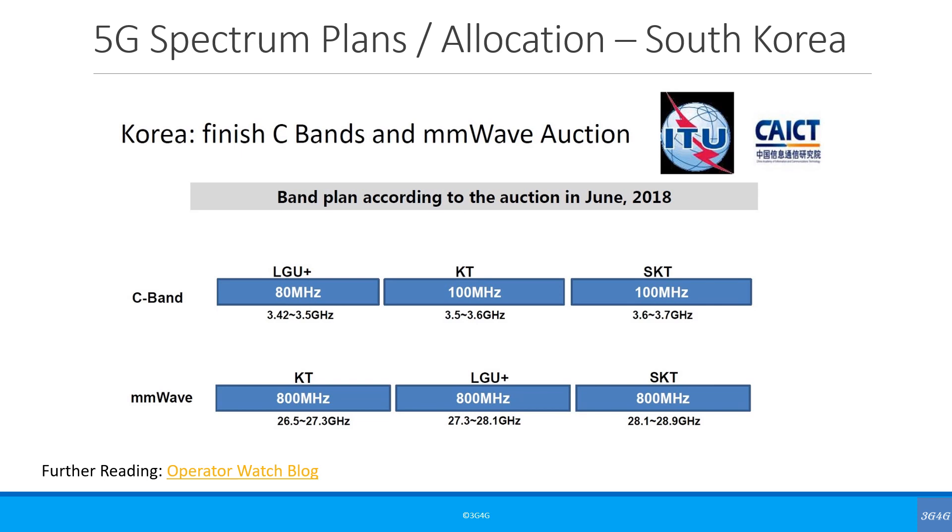Looking at some of the 5G auction results from different parts of the world, in South Korea, each operator received 80 or 100 MHz of the C band which is the 3.5 to 3.6 GHz band or the capacity layer. Each operator also received 800 MHz of the millimeter wave spectrum. This is generally as good as it can get.